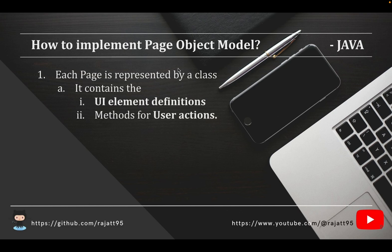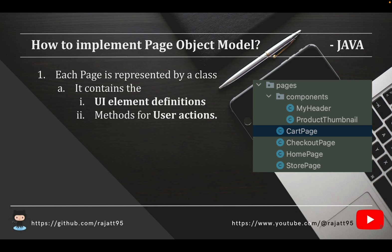How do we implement Page Object Model with Java? Each web page is represented by a Java class — one web page, one Java class. That class will have two things: first, the UI element definitions — how you are finding that web element, whether with XPath, CSS selector, partial link text, link text, or tag name. Second, methods for user actions — what operation you are performing on that web element: clicking, entering text in a text box, doing mouse over, etc.